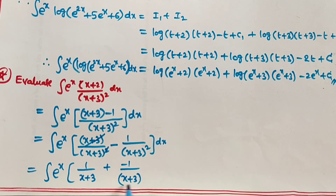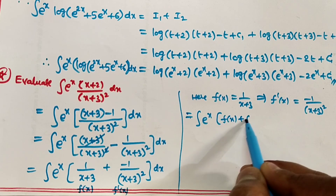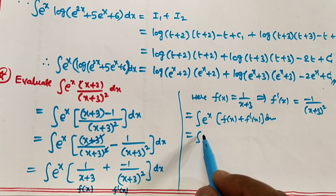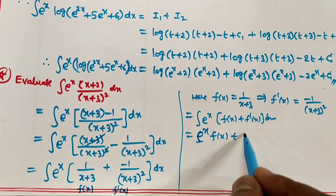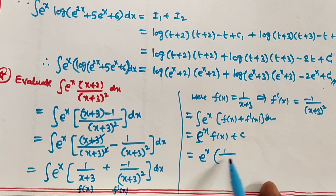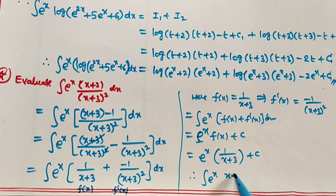Splitting: I₁ = t·log(t+2) − ∫[(t+2)/(t+2) − 2/(t+2)] dt = t·log(t+2) − ∫1 dt + ∫2/(t+2) dt. This gives t·log(t+2) − t + 2·log(t+2) + c₁. Taking log(t+2) common from the first and third terms: I₁ = (t+2)·log(t+2) − t + c₁. This is equation 2.